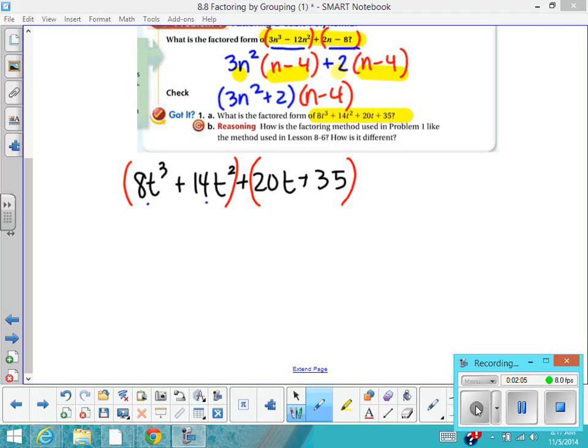I see that a 2 is the largest thing that goes into 8 and 14. And then looking at the variable piece, I have the smallest power of t that goes into both of them is t². So that is my GCF.